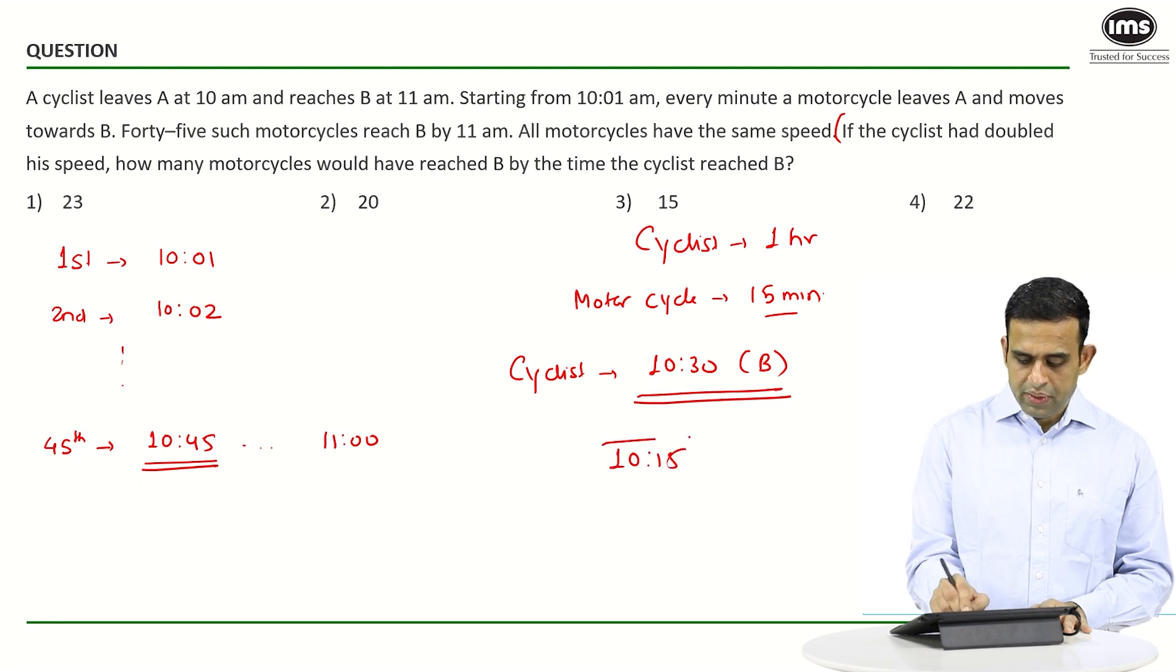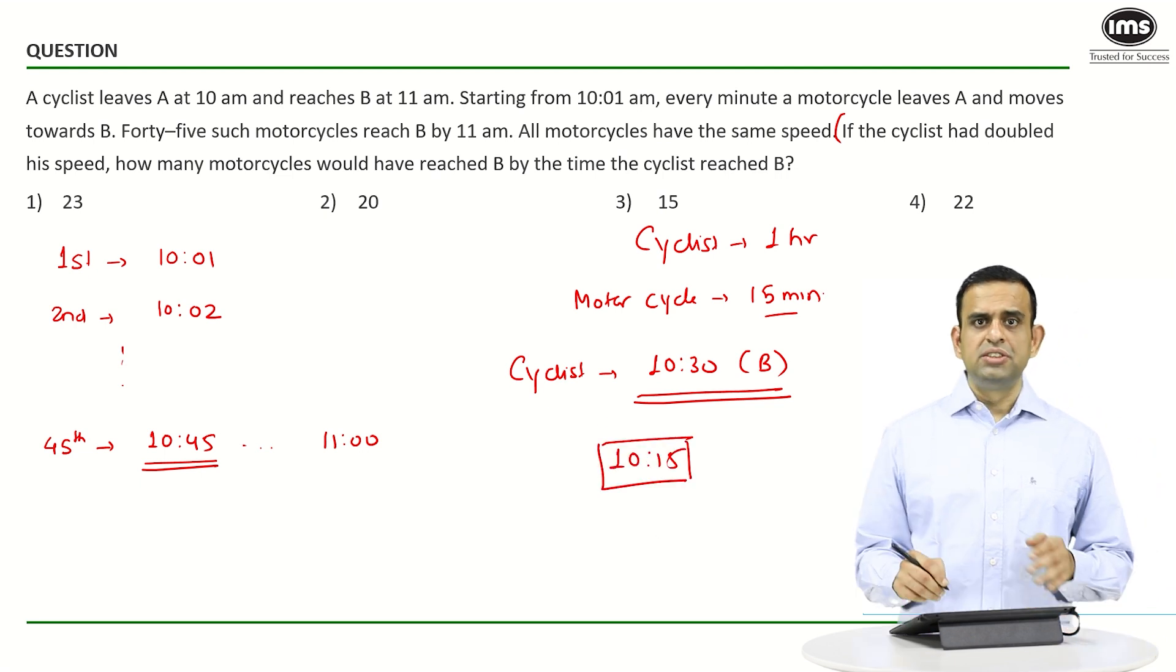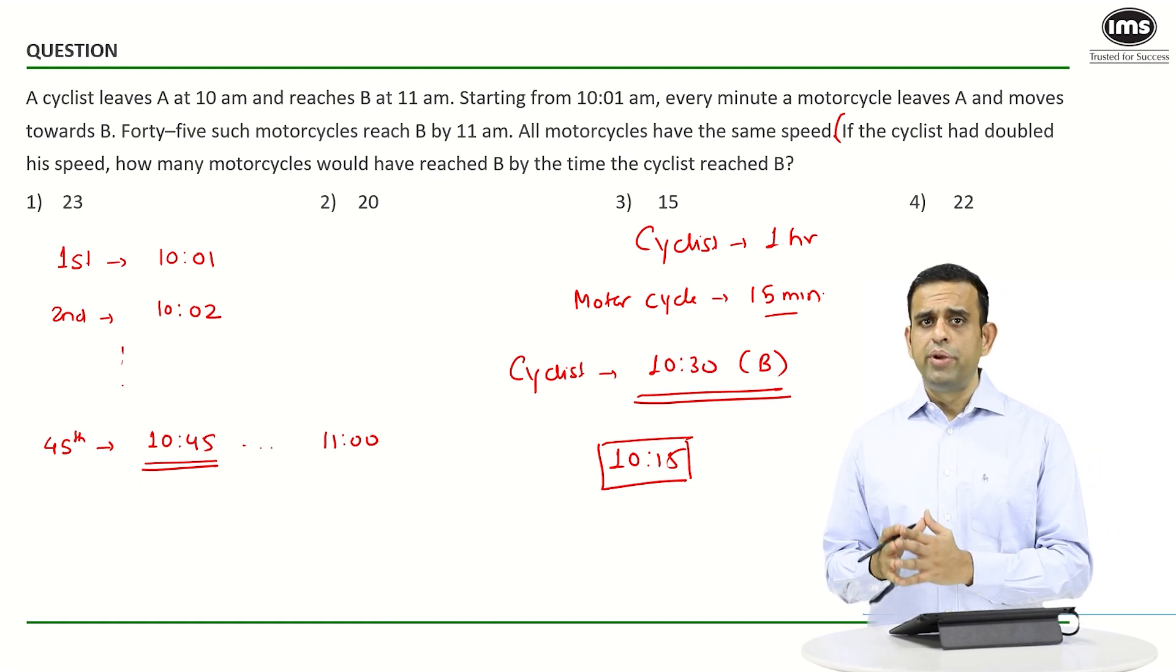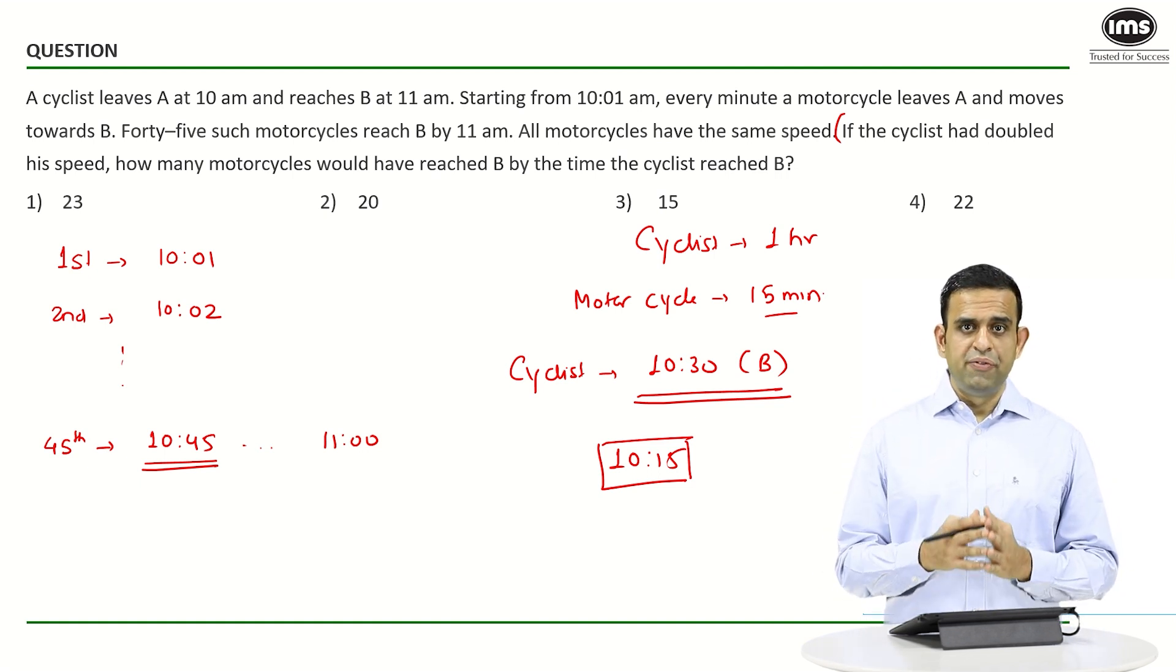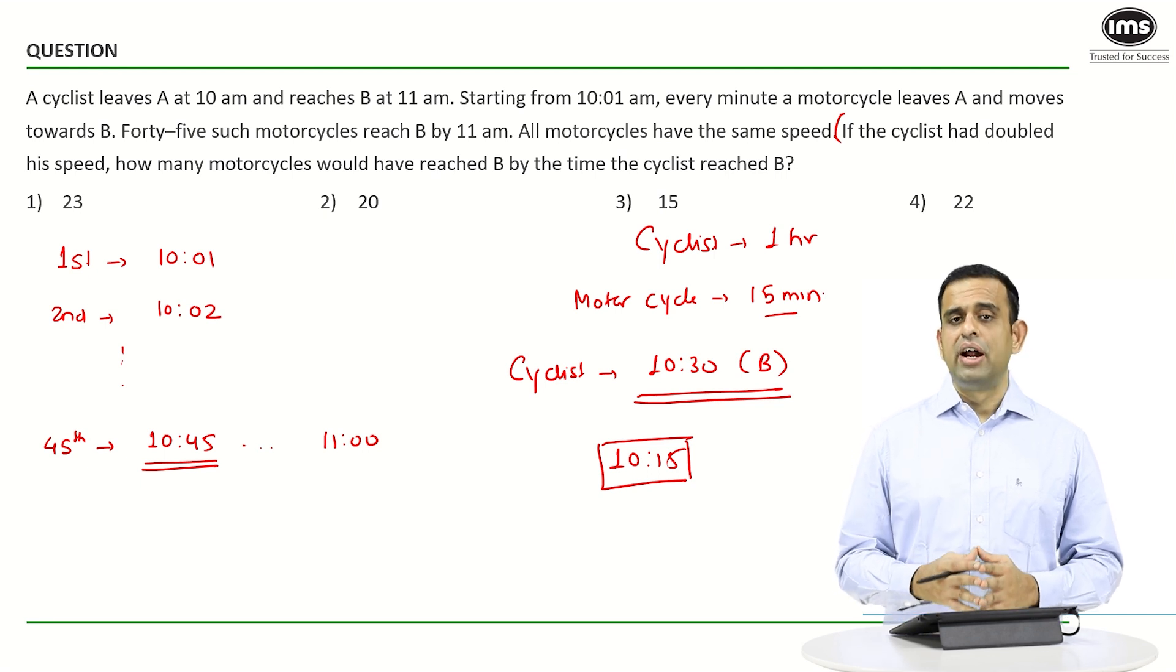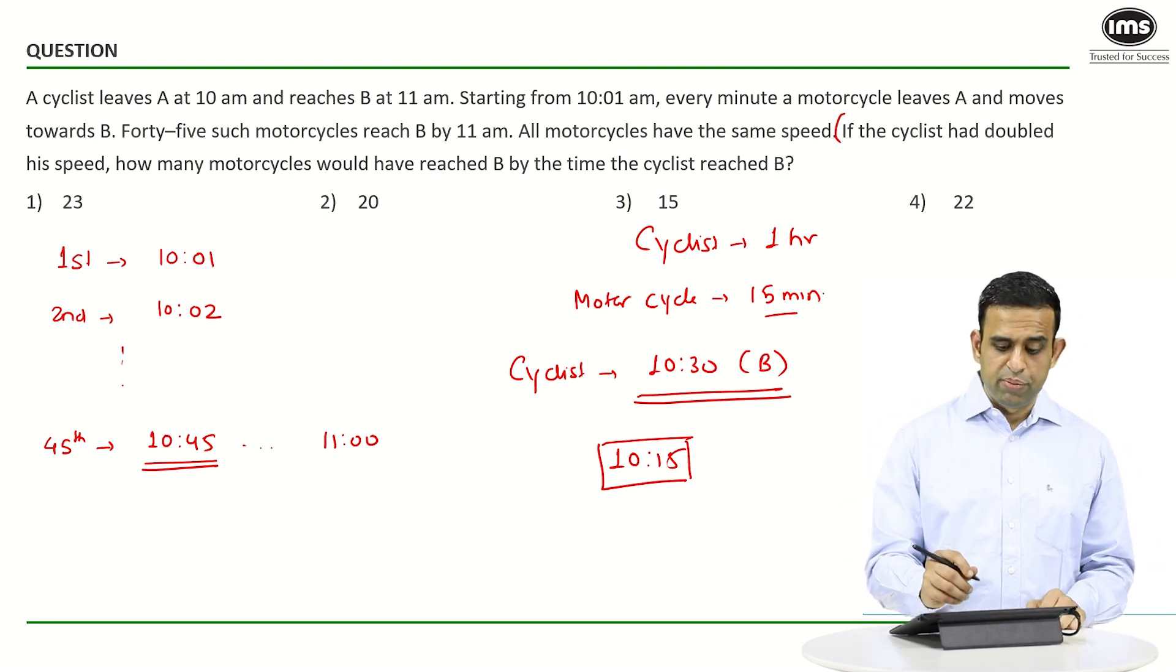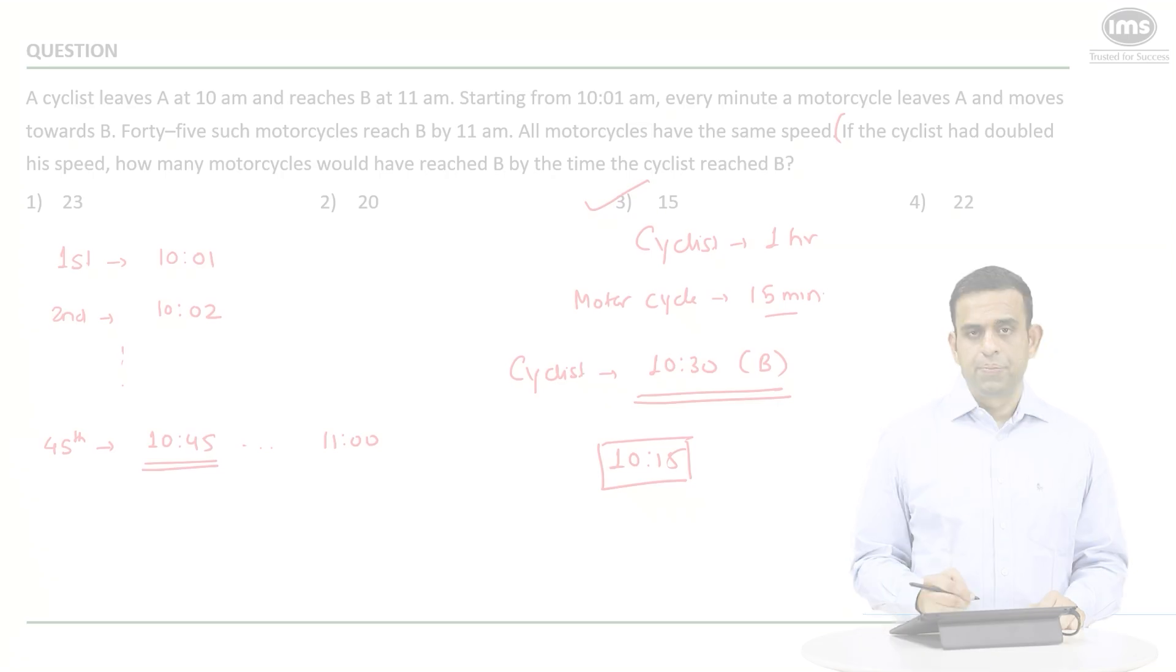By the same logic, since the first motorcycle leaves at one minute past 10, the second one leaves at two minutes past 10, and so on, the 15th motorcycle must have left at 10:15. So my answer for this particular question is option number 3.